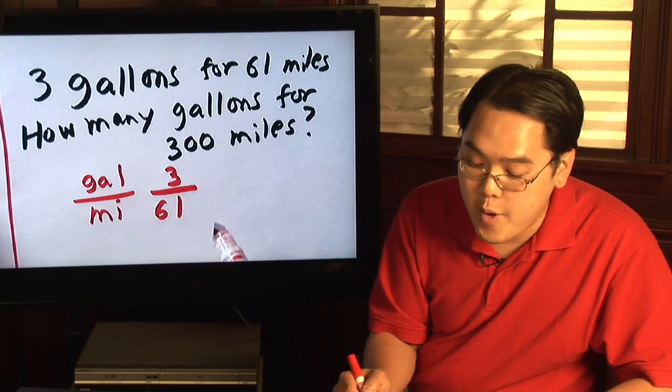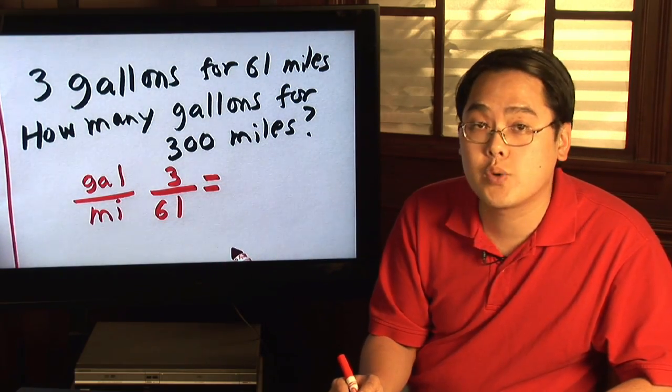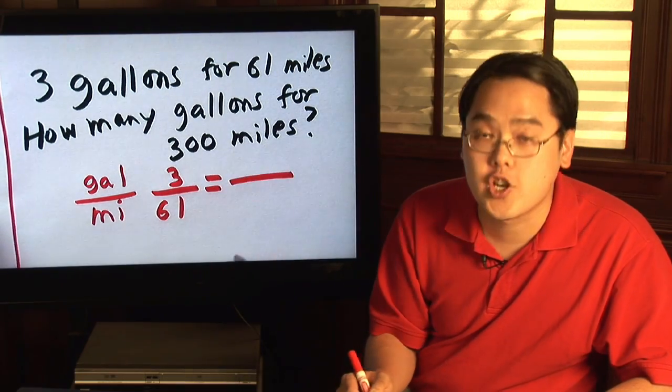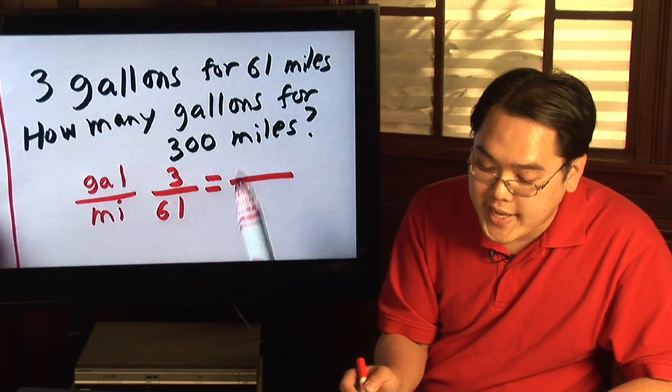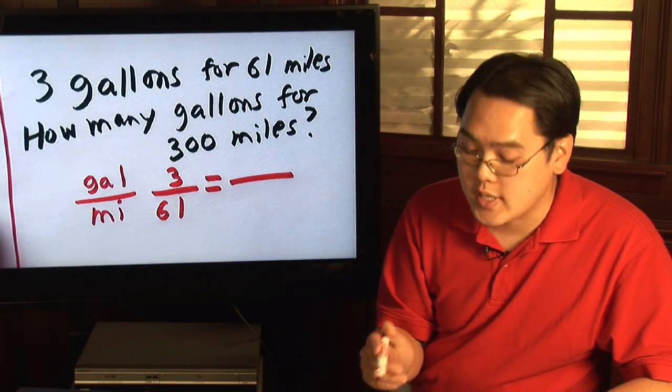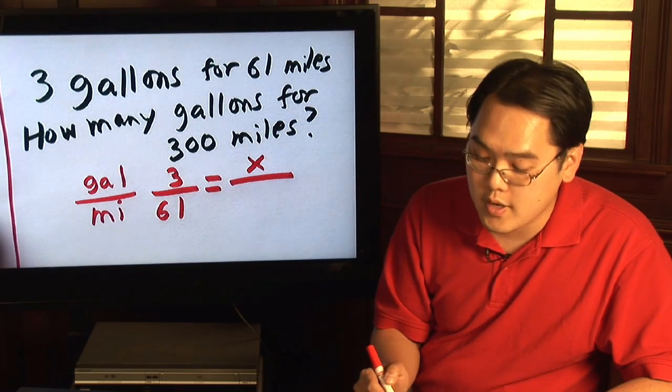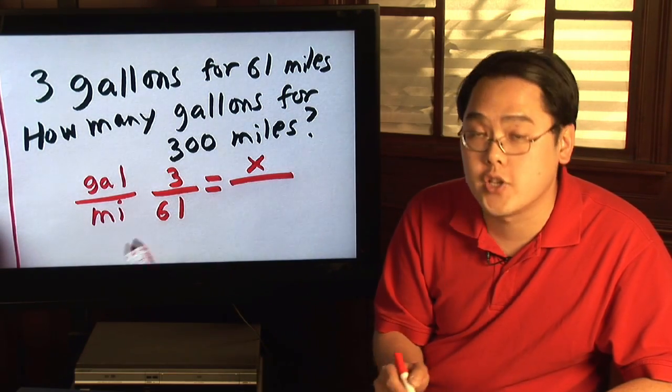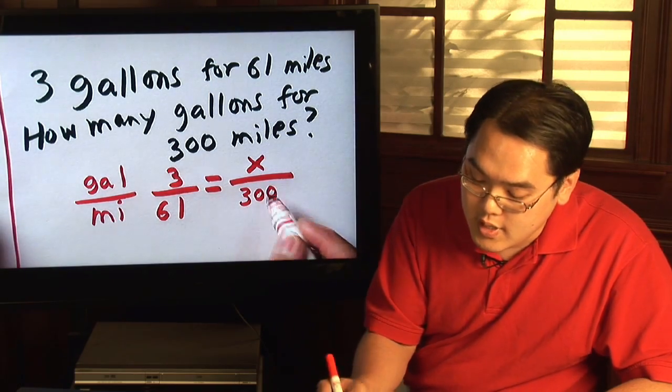Now to figure out how many gallons for three hundred miles, all you need to do is have an equal sign and then have another fraction on the other side. Now being that we're trying to figure out how many gallons, remember gallons is in the numerator so let's call that x and then for three hundred miles because you know miles is in the denominator, you put three hundred at the bottom.